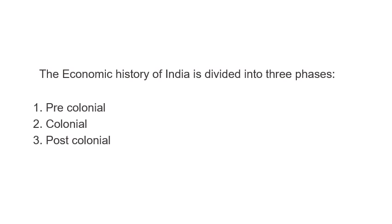Post-colonial, once we came out of British rule and India became independent, the government had to bring in a lot of plans for the revival and improvement of the Indian economy. Five-year plans were implemented — many policies and schemes were brought in — wherein the government planned to bring change in agriculture, industries, and service sectors.